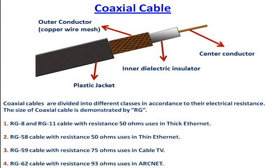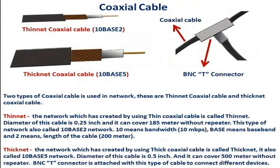Third, RG-59 cable with resistance 75 ohms is used in cable TV. Fourth, RG-62 cable with resistance 93 ohms is used in ARCnet. There are 2 types of coaxial cable used in networks: these are thinnet coaxial cable and thicknet coaxial cable.